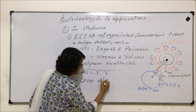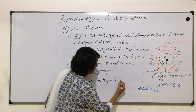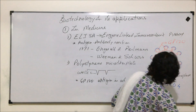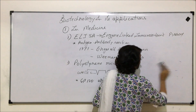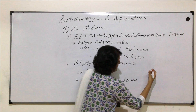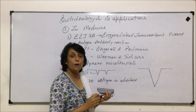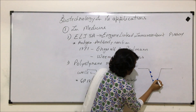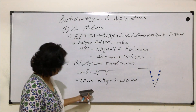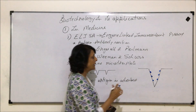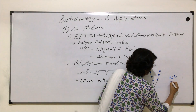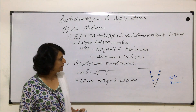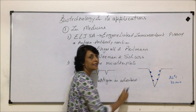The GP120 antigen is adsorbed on the inner surface of the well. This is our first step — we add GP120, which is our antigen, into this well. We will incubate it at 24 degrees Celsius for 30 minutes. After that, we will discard the solution. Whatever solution of this antigen we poured in, we throw it out. These particles are very tiny and they get adsorbed onto the surface.